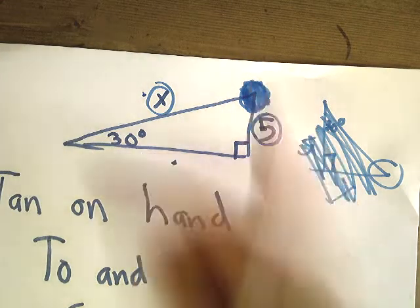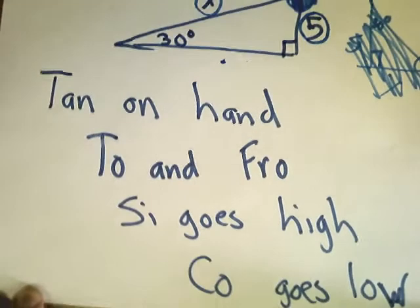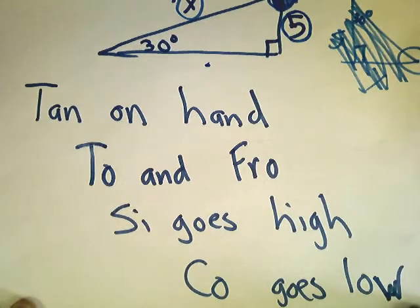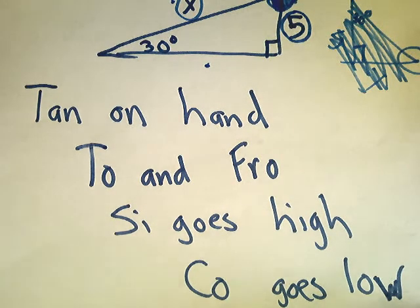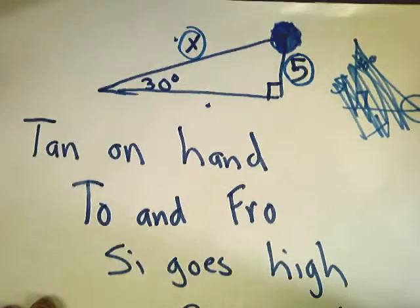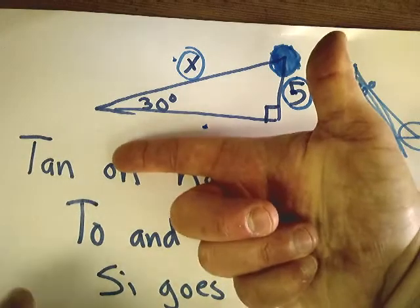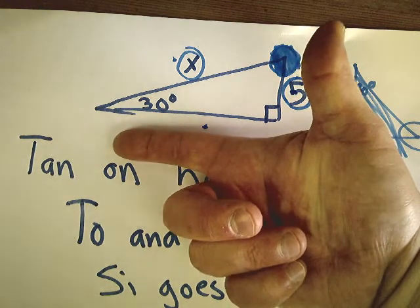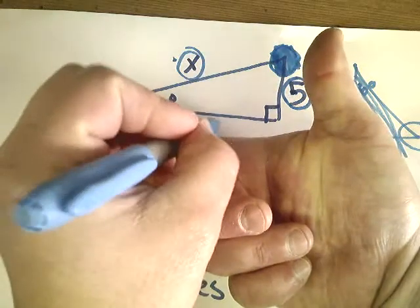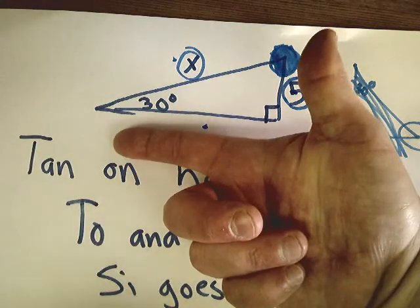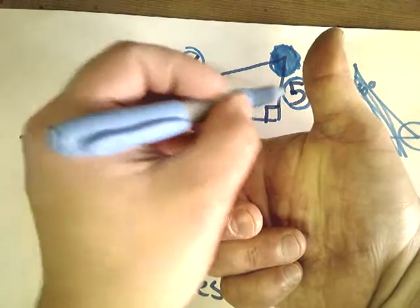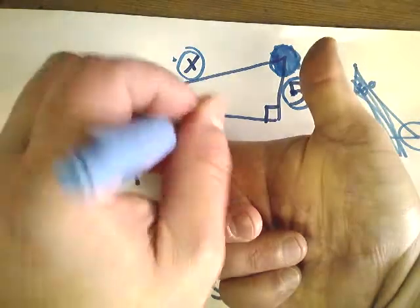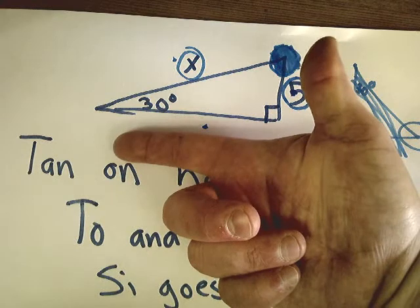So we're going to use a little song: 'Tan on the hand, to and fro, psi goes high, co goes low.' Tan on the hand means: once you set it up, if both the number you're looking for and the number you were given are on your hand — the thumb and forefinger side — then it's a tangent question. In this case, it's not tangent. We have one on the thumb but not on the finger.